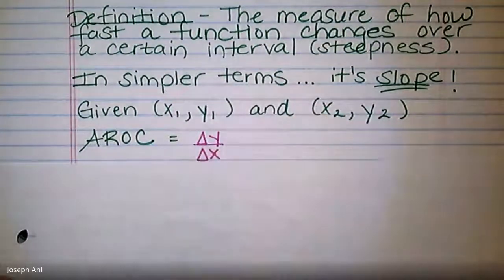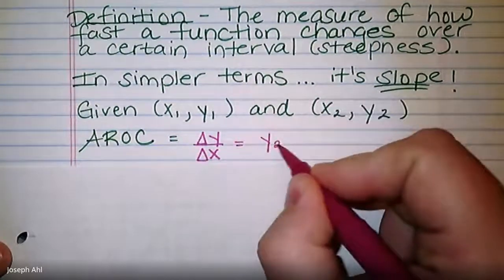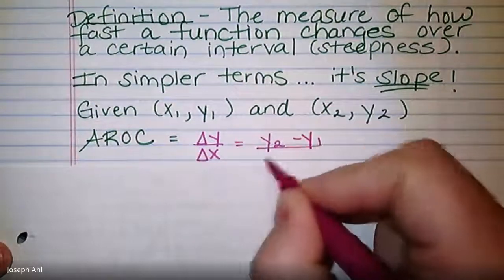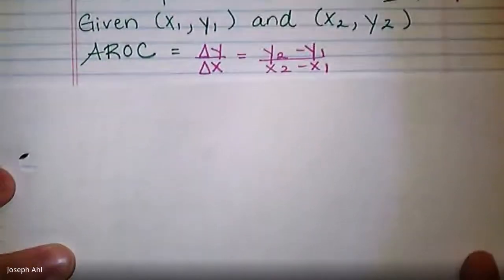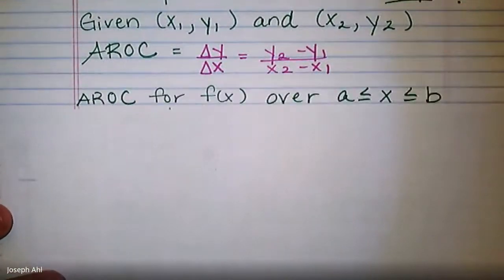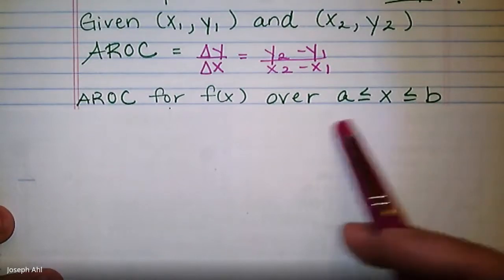The average rate of change, which is the slope, can be expressed a few ways. I want you to be familiar with the notation delta y over delta x — delta representing the change in y over the change in x. From there we extend that to the difference in the y values: (y₂ − y₁) over (x₂ − x₁). For a given function over a defined interval from a to b, it's still a calculation of slope, but we'll use function notation.